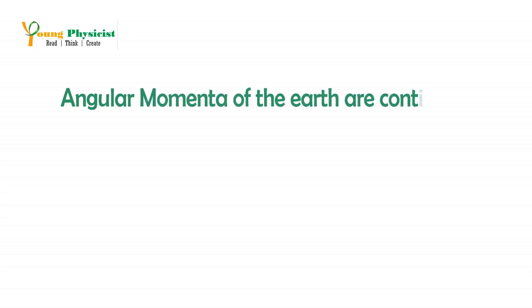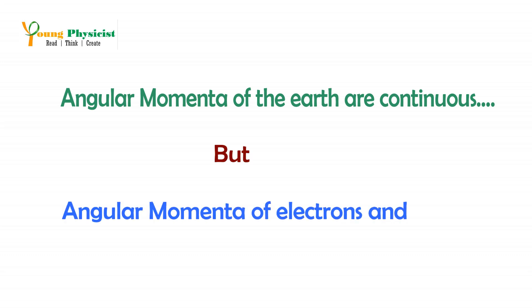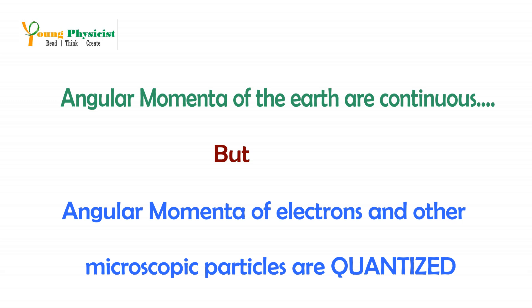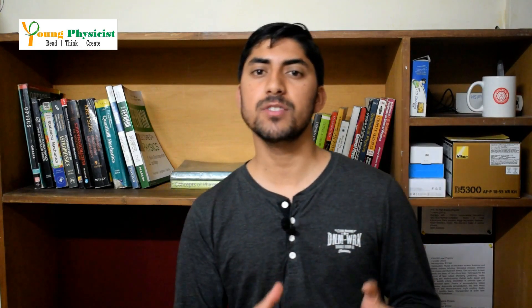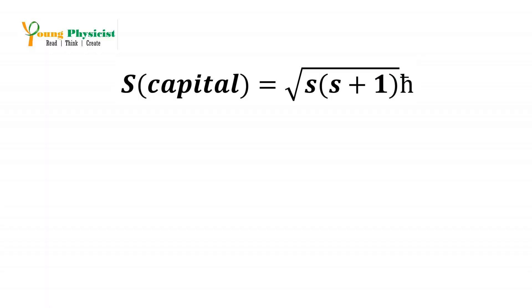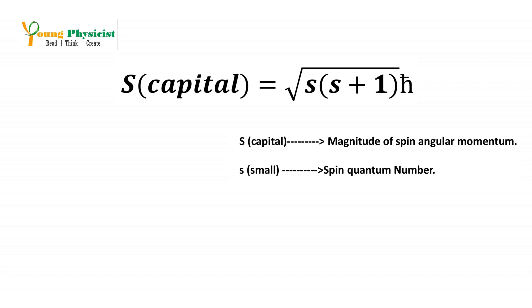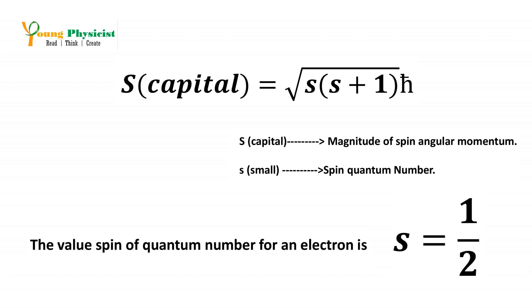The difference between the momenta of the Earth and the momenta of electrons is that the momenta of the Earth are continuous — they can have any value from zero to infinity — but the momenta of electrons are quantized; they have only certain possible values. In 1928, the giant of physics Paul Dirac, on the basis of relativistic quantum mechanics, showed that the magnitude of spin angular momentum associated with one electron can be given by a formula, where capital S represents the magnitude of spin angular momentum and small s is the spin quantum number. He successfully derived that this spin quantum number for an electron is one-half.